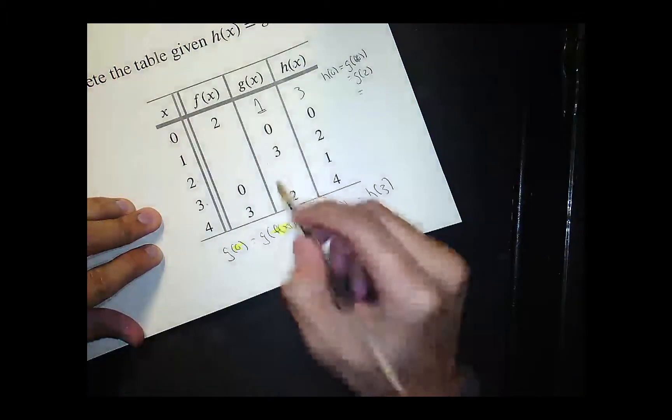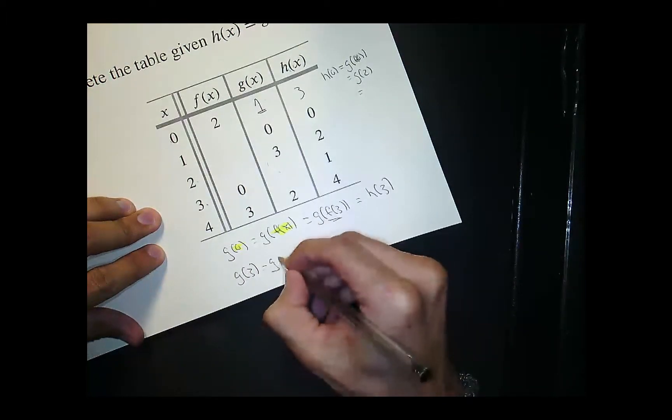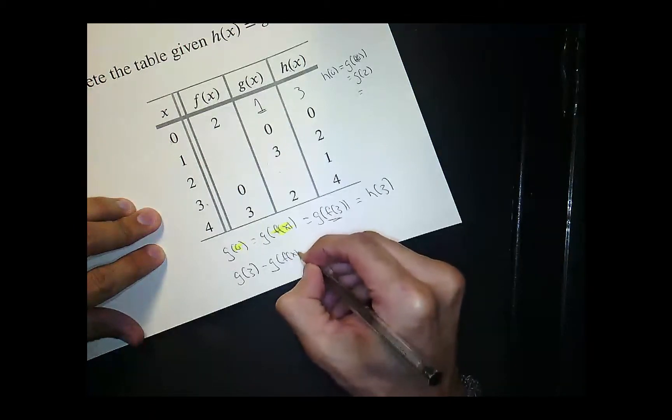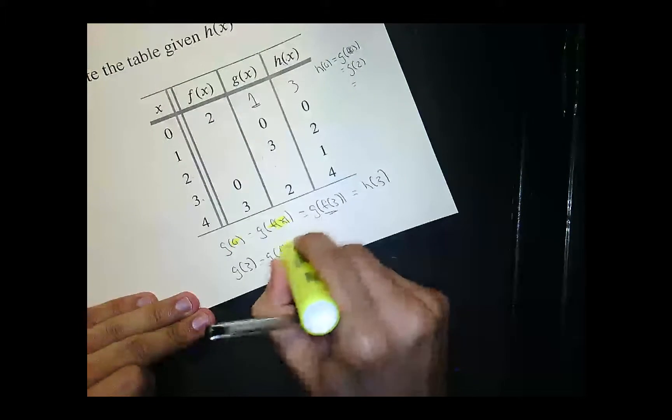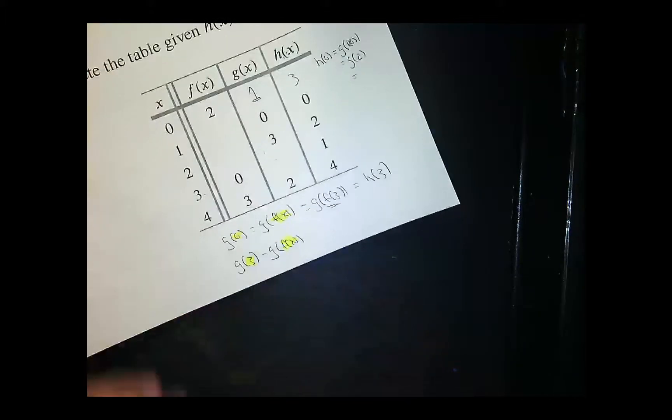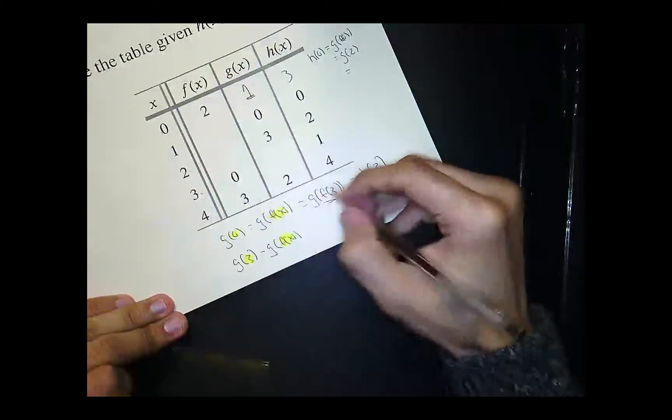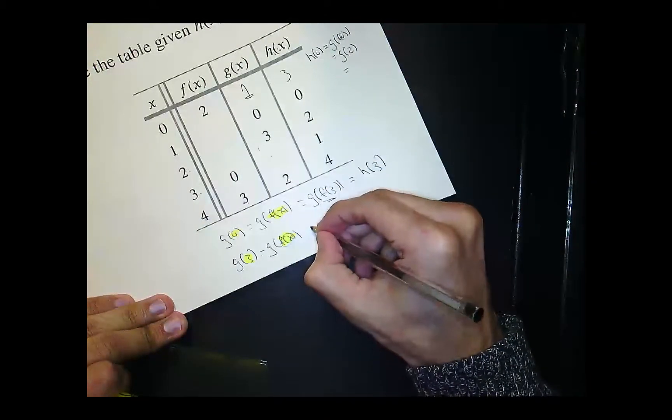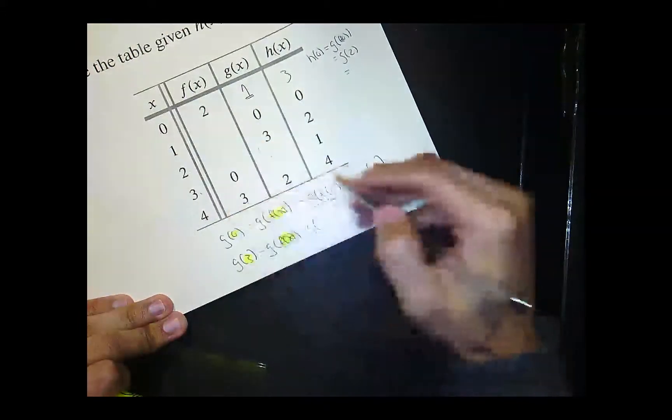Okay, let's try g of 3. So g of 3. Well, what value, what f of x, when does f of x equal 3? Well, f of x equals 3. Here you could see, right? So I could replace that with f of 4.